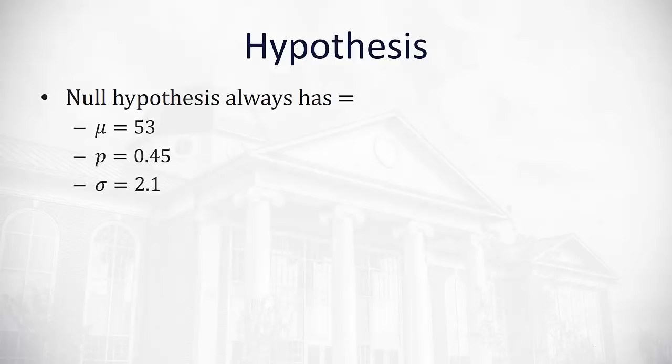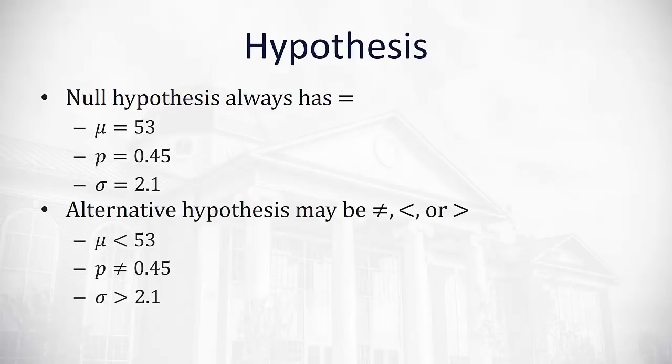There's going to be a null hypothesis which always has an equality in it. An example might be the average μ is equal to 53, or the population proportion p is equal to 0.45, or the population standard deviation σ equals 2.1. The null hypothesis will always have equals in it and will always assume that null hypothesis is true until we prove it false in favor of an alternative hypothesis.